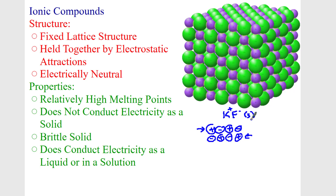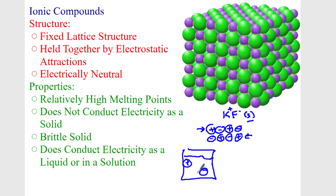If you take this solid and dissolve it in water, the positive and negative ions are free to move, so it will conduct electricity. Similarly, if you melt it into a liquid, the positives and negatives are free to move around, so it will conduct electricity as a liquid.